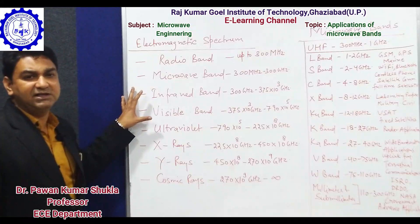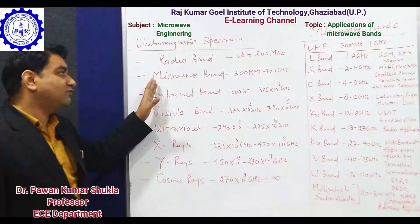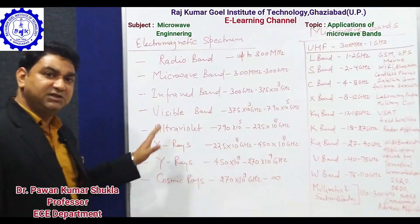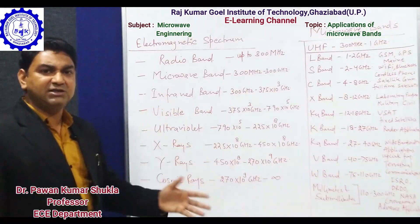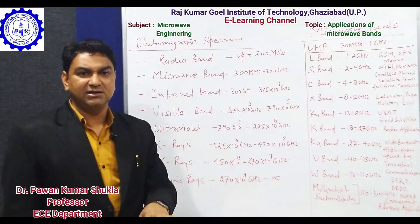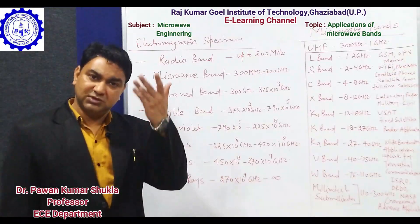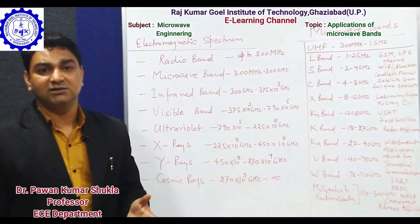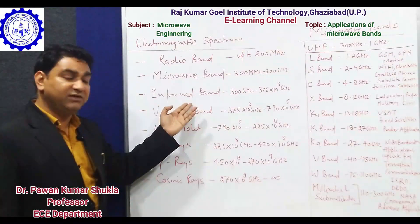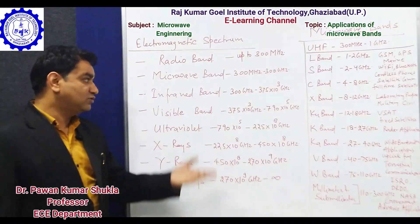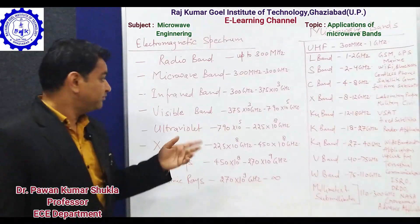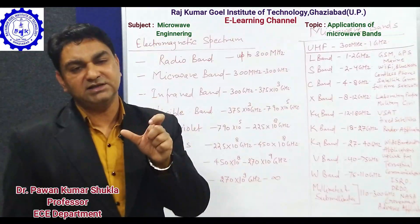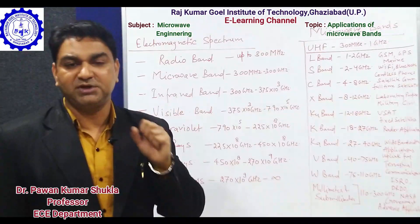Considering the complete electromagnetic spectrum, after the microwave band it is not limited to 300 gigahertz only. The spectrum reaches towards large and multiple frequencies, extending to the point of infinity where invention has not been carried out yet. The first band after microwave is the infrared band, from 300 gigahertz to 375 × 10³ gigahertz. After that is the visible spectrum, which is a very specific band of the electromagnetic spectrum, utilizing wavelengths used for optical communication purposes.